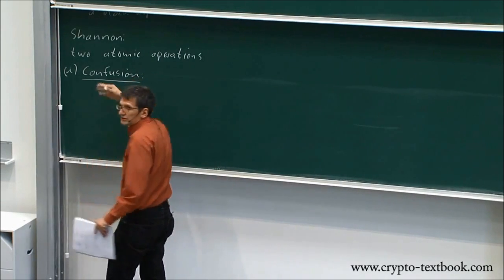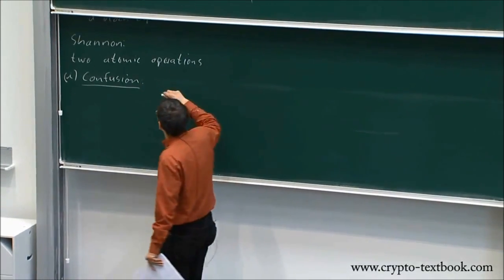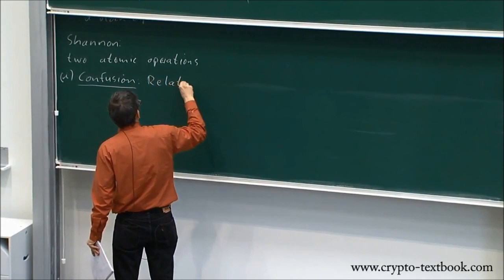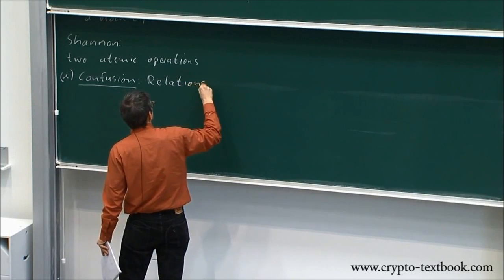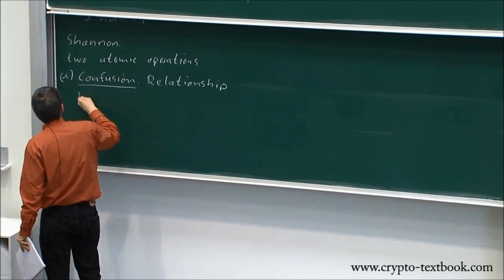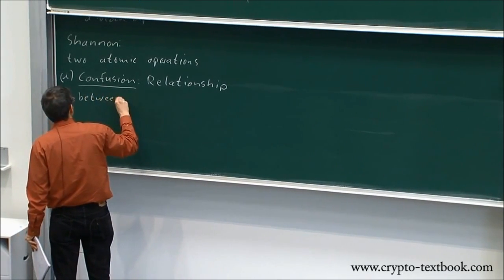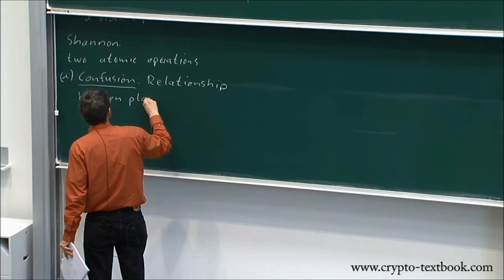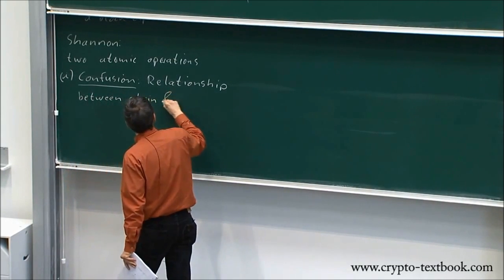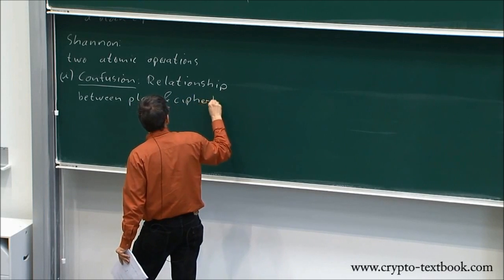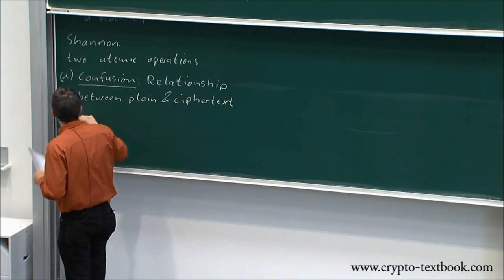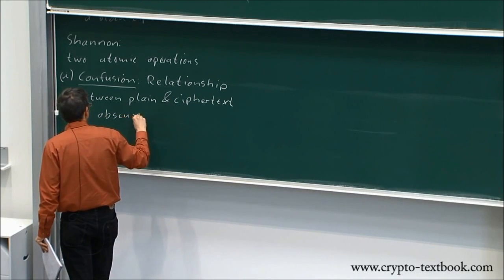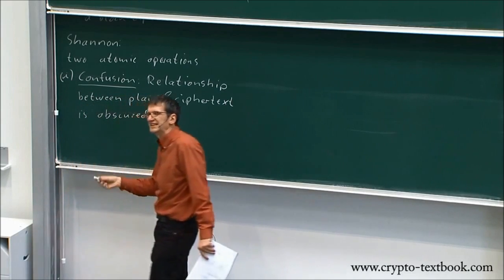What is confusion? In the block cipher context, confusion means the relationship between plaintext and ciphertext is obscured or hidden.